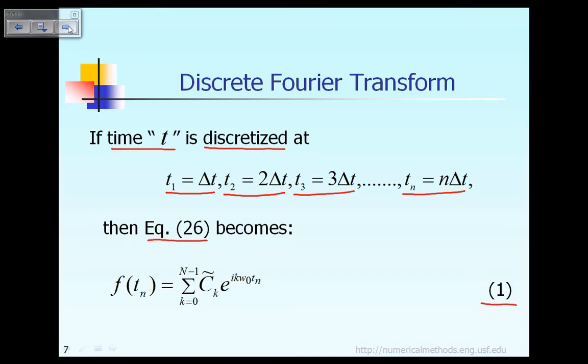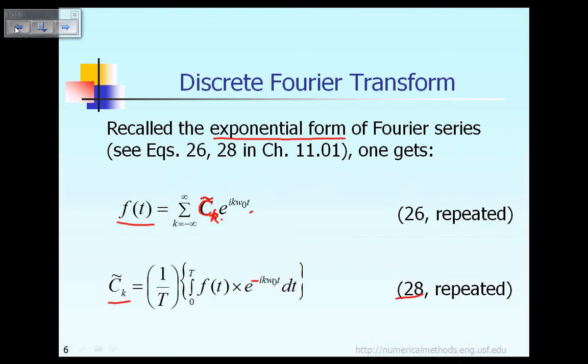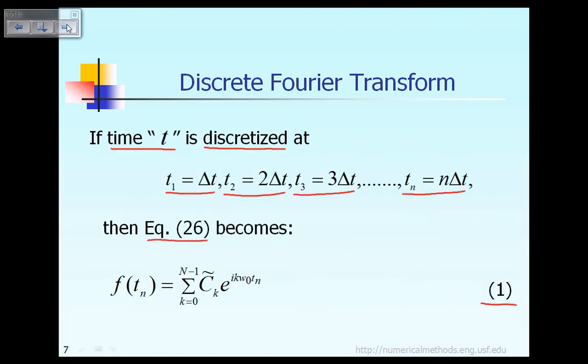As a matter of fact if you look back into equation 26, when you discretize the time t, instead of calling it t you now call it t sub n. Where the value of t sub n could be equal to delta t or 2 delta t or 3 delta t or n times delta t. It could be at any discretized time. So by letting t become t sub n, then equation 26 can be expressed as shown in equation 1. You see in equation 1 instead of t we just say t sub n. So that is what we have so far.